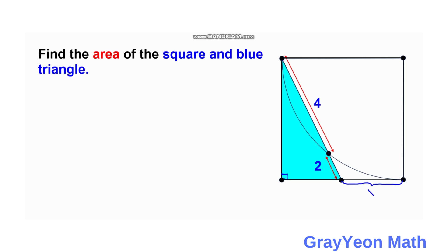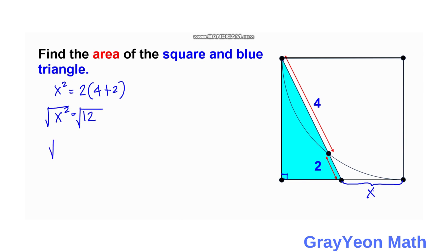We name the tangent segment x. Using the tangent-secant relationship, we square the tangent segment and set it equal to the exterior segment — which is two — multiplied by the total secant segment — which is four plus two, giving x² = 2 × 6 = 12. Taking the square root of both sides gives x = √12.